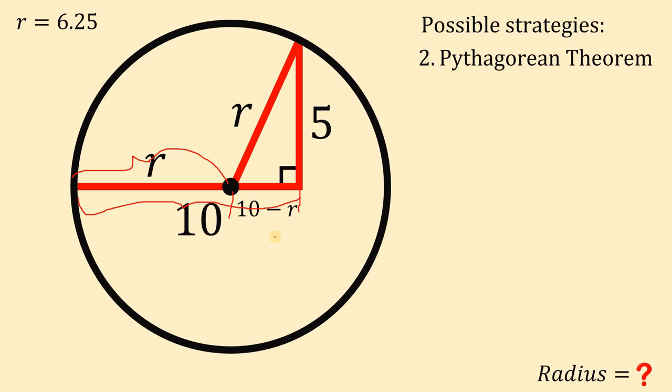At this point, let's focus on the right triangle having a measure of R, 5 and 10 minus R. We can now use the Pythagorean theorem because this is a right triangle. We have the hypotenuse R and the two legs measure 5 and 10 minus R. So we have (10 minus R) quantity squared plus 5 squared equals R squared.